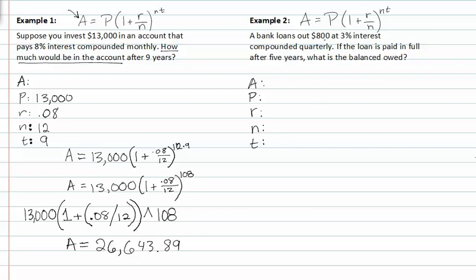A bank loans $800 at 3% interest, so we know our interest rate is 0.03. We know how much is being invested and it's compounded quarterly, so the number of times it's compounded per year is 4. The loan is paid in full after 5 years, so T is 5. Now that we know all this information, we'll just plug in each piece into our equation.